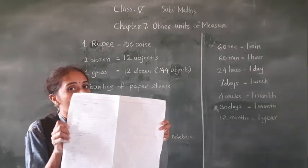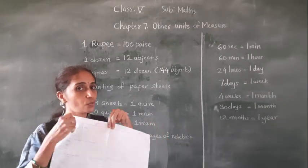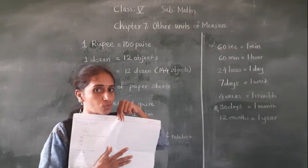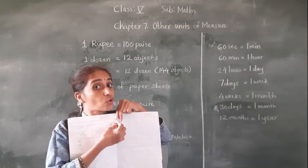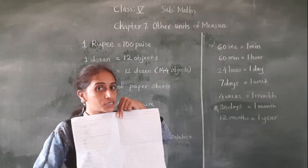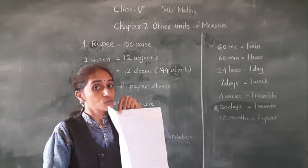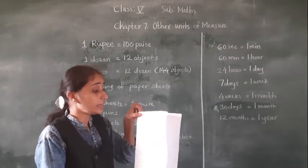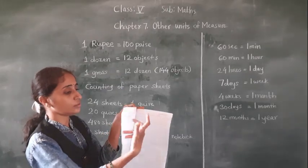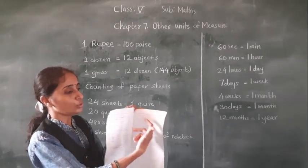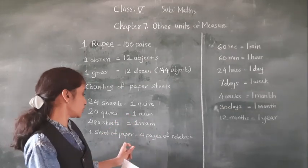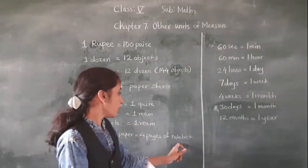This is a sheet of paper — a full sheet of paper. This is the notebook's paper. The notebook is stitched from the middle. So how many pages are there for one sheet of paper? 1, 2, 3, 4 — four pages for one sheet of paper.